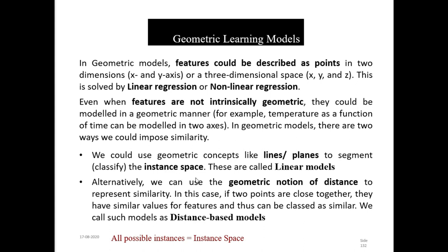So we could use geometrical concepts like lines or planes to segment the instance space. Now what is an instance space? Instance space is all the possible instances. Suppose I have three values x1, x2, x3 and all of them are binary — so the combination of all the possible instances is the instance space. So we could use geometrical concepts like lines and planes to segment the instance space. These are called linear models.